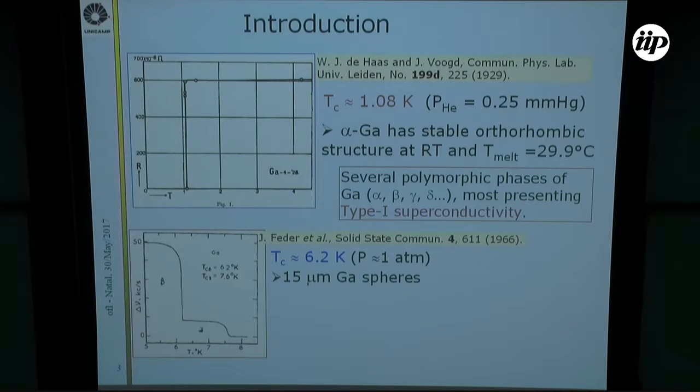One of these phases is the beta-gallium, which was discovered to be a superconductor in 1966 with a Tc around 6.2 K. This beta-gallium has metastable monoclinic structure and melts around minus 16 degrees Celsius. So it's necessary to have some geometrical constraint in order to stabilize the beta-gallium phase.